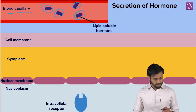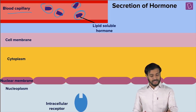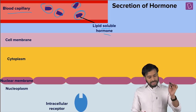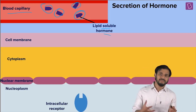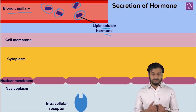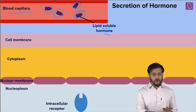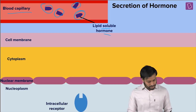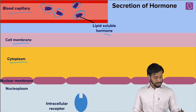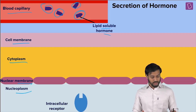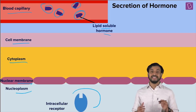These lipid soluble hormones are traveling along with the blood through the blood vessels to reach the target site. The blood helps them travel. You have the cell membrane, and moving inside you have the cytoplasm, the nuclear membrane, and next is the nucleoplasm.